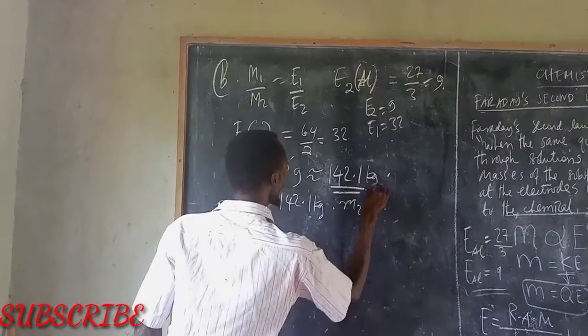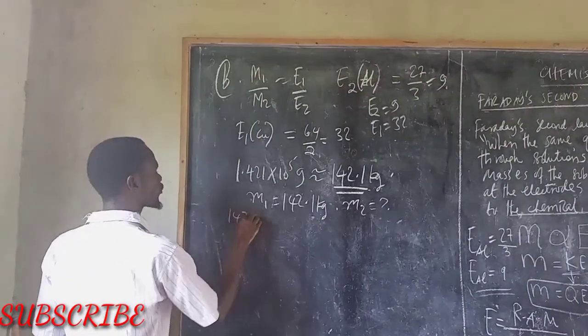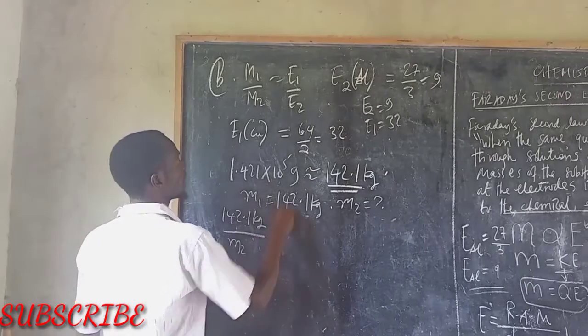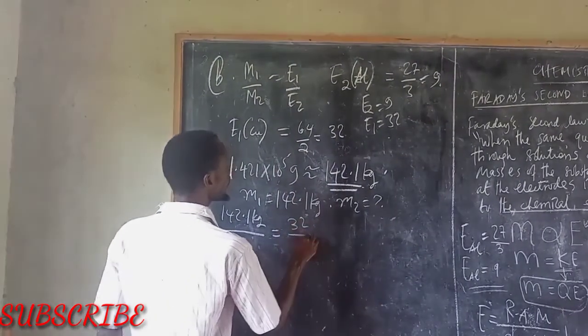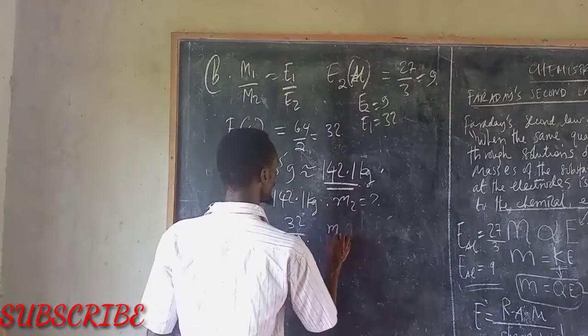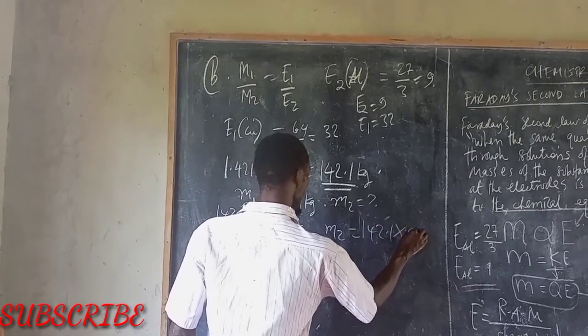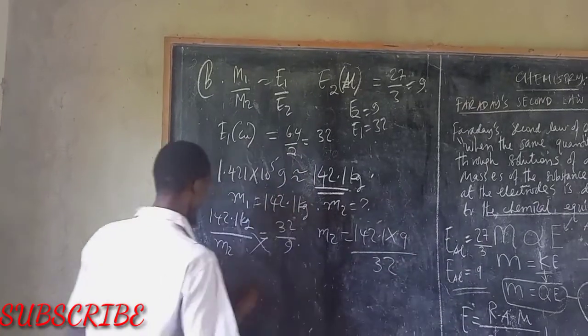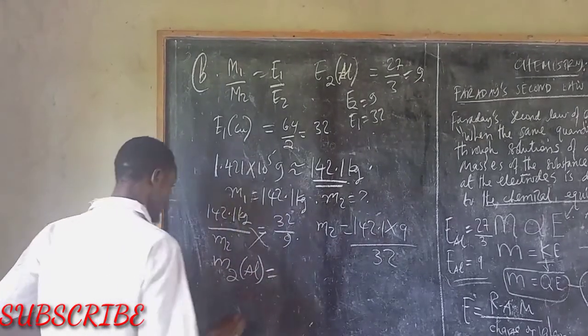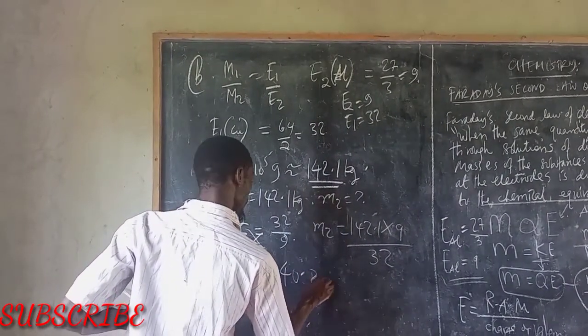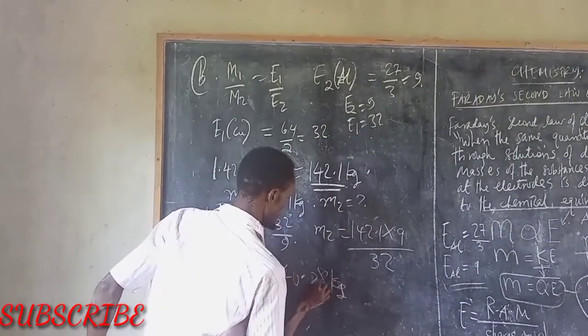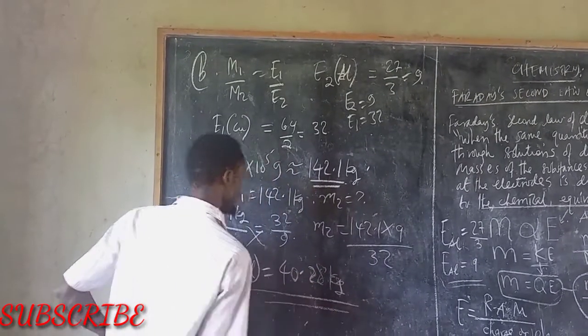Now, how about M2? By using this formula, the mass M2 that is for aluminum, if now you multiply, you will find this is 40 to 50.2 kilograms.